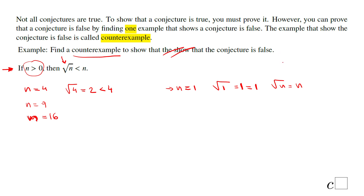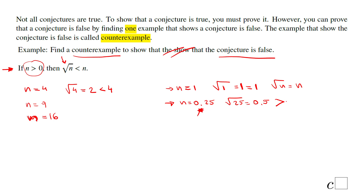You can stop at one counterexample, but here is another one: if n equals 0.25, the square root of 0.25 is 0.5, which is more than 0.25. So the square root is greater than n in this case — another good counterexample to show the conjecture is false.